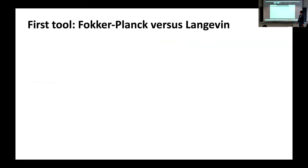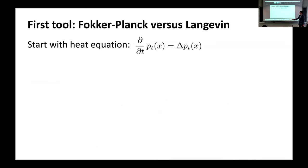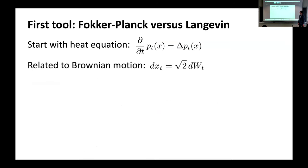The first tool we're going to employ is the distinction between Fokker-Planck equations and Langevin dynamics. This is one of the central tools in getting these models to allow you to efficiently sample from the space of images. We'll build up to this in steps. Let's start with the heat equation — something that we all know and love — which is related to Brownian motion. The heat equation is a partial differential equation, whereas Brownian motion is a stochastic ODE. It describes the stochastic evolution of a particular point in R^n.